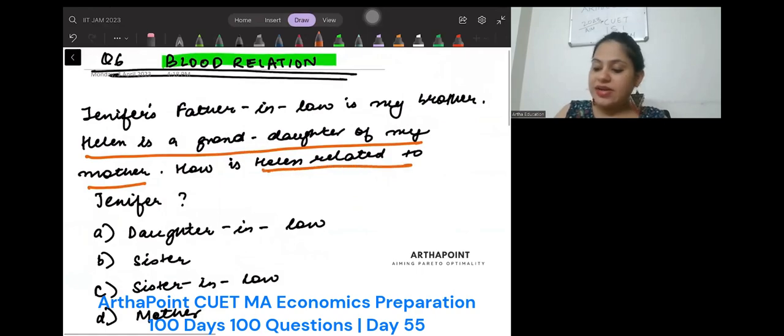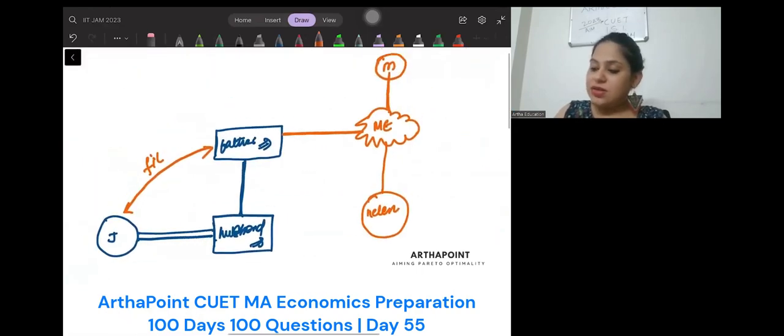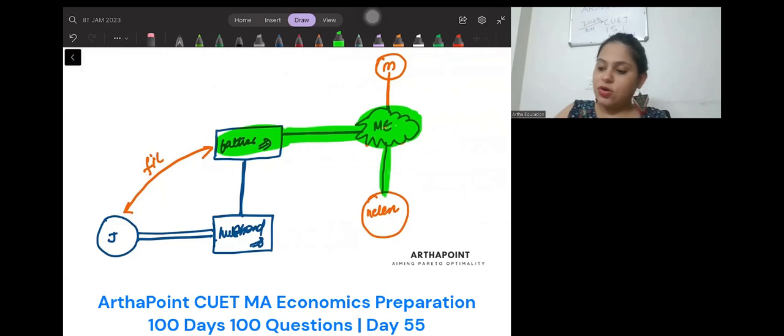How is Helen related to Jennifer? Now see here. This is me. Me and father-in-law are on the same level. We are brother-sister or brother-brother. This is my daughter. So if we are brother-brother or brother-sister, it means that these two are also related to each other. How?